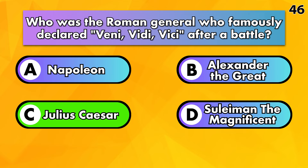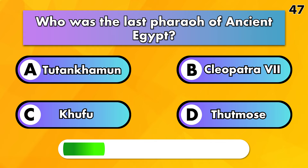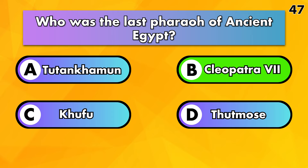Who was the last pharaoh of ancient Egypt? Tutankhamun, Cleopatra VII, Khufu or Tutmose? The answer is Cleopatra VII.